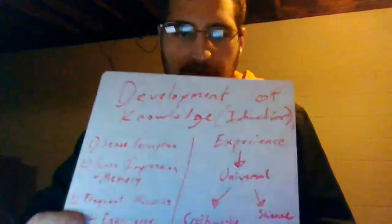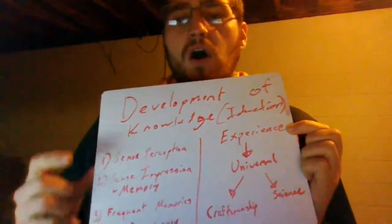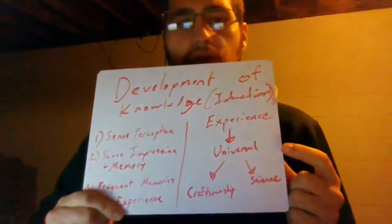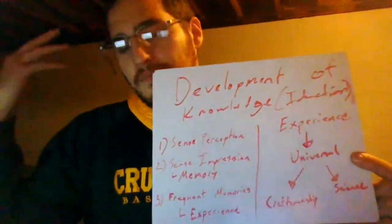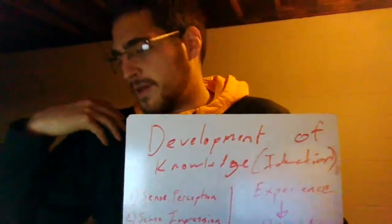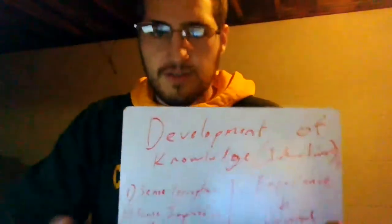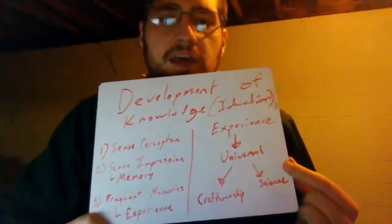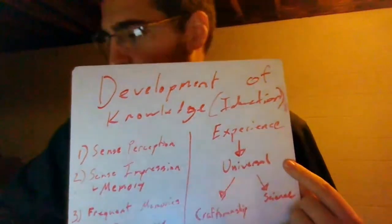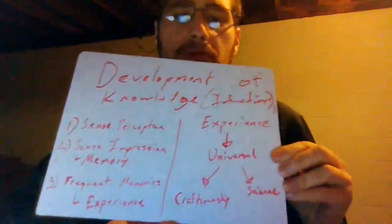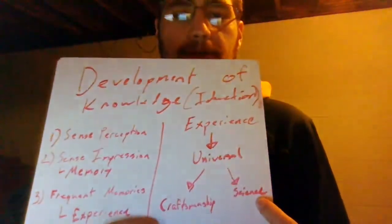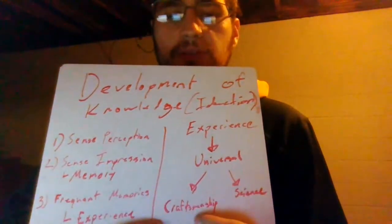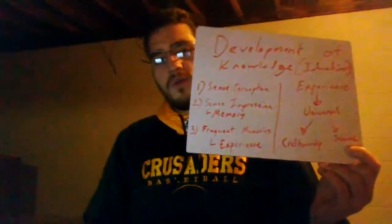Once man has a sufficient amount of experience, from his experience, all these individual sense perceptions eventually build up to universal knowledge. It requires sensing and perceiving many, many individuals. After we have become acquainted with several individuals — say, several dogs — and you have multiple sensory experiences with them and experience with the animal, you then come to a universal knowledge of that species, for example. When man has acquired universal knowledge, he's then capable of craftsmanship and also science in that specific area where he possesses universal knowledge.